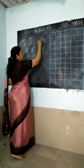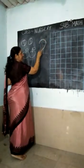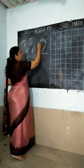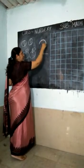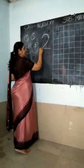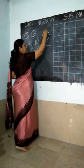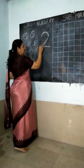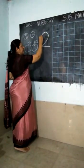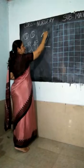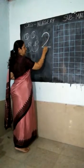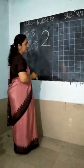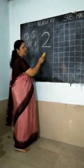Go, slant and sleeping line. Go, slant and sleeping line. Go, slant and sleeping line. Which number is this? Number 2.